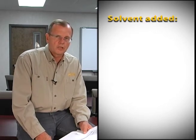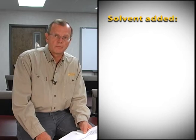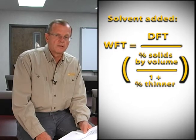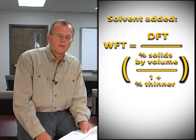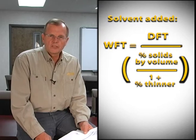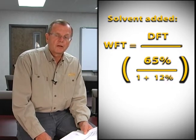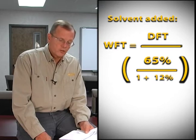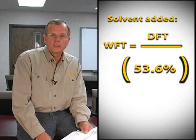The next formula you should be aware of is what happens when you add solvent to the paint. If you add solvent or thinner, it reduces the solids by volume. So the formula is modified a little bit. You must determine the new solids by volume by taking the solids by volume in the can — 65 percent in this example — and divide it by 1 plus the percent thinner added. For example, if I add 12 percent, the new solids by volume is 0.65 divided by 1.12, which is 53.6 percent.